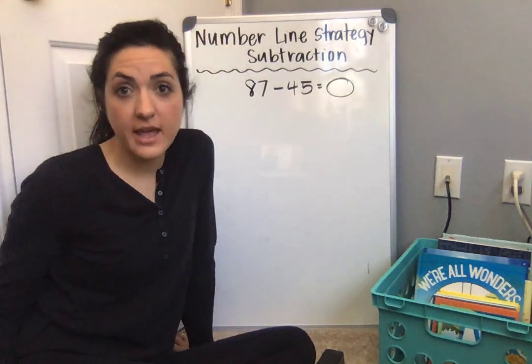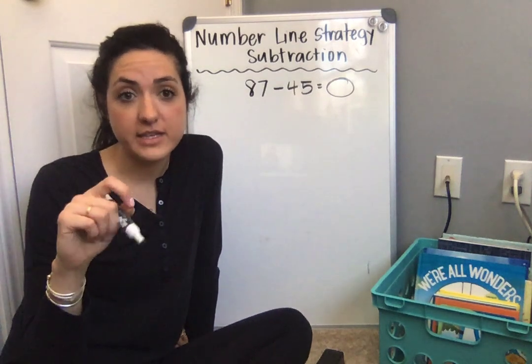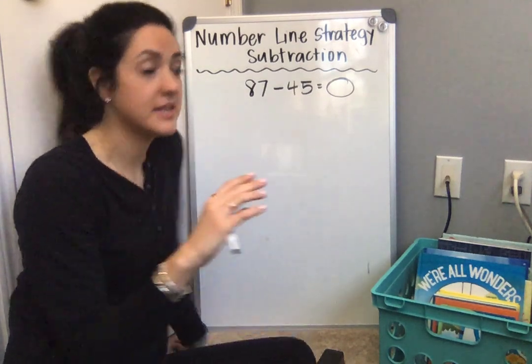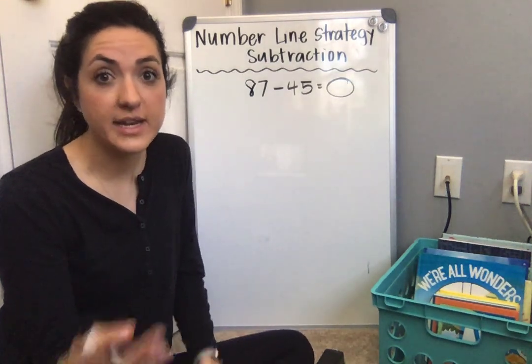Now, when I'm solving a subtraction equation with the number line, I know that I need to change my equation, that's a subtraction equation, into a change unknown addition equation. So I need a plus sign in there.